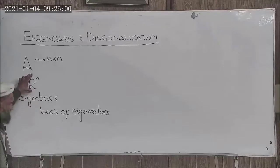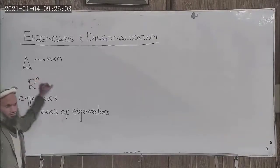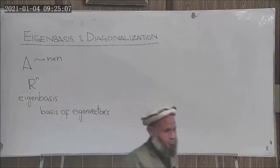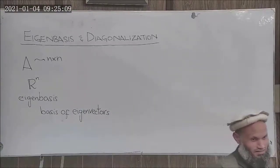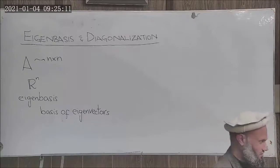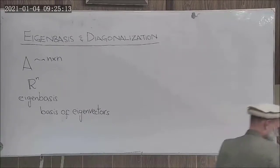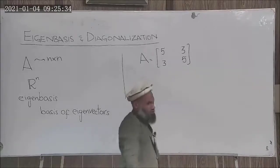The eigenbasis is the basis of eigenvectors corresponding to this matrix. Under what conditions will it form a basis for R^n? When there are n linearly independent eigenvectors. Let's elaborate this point with the help of examples.